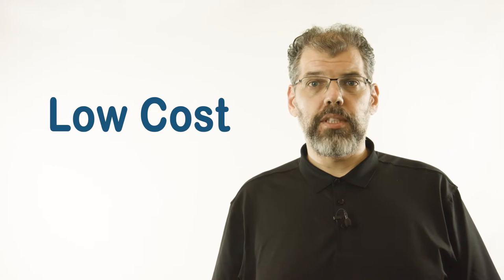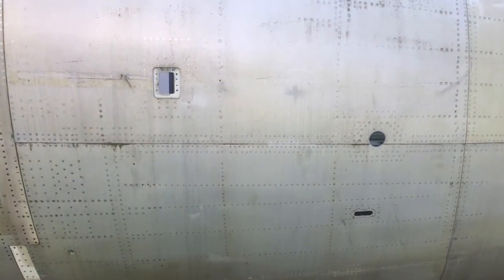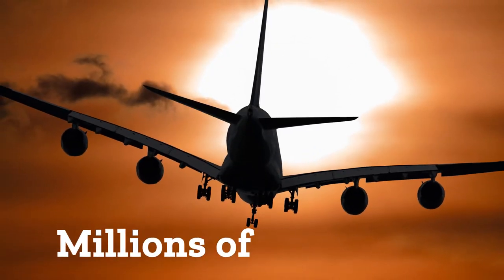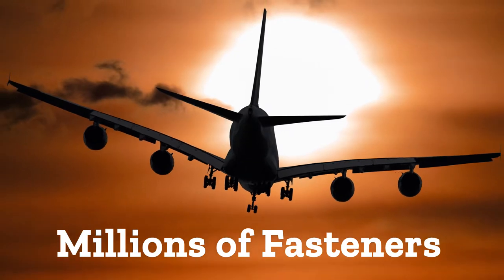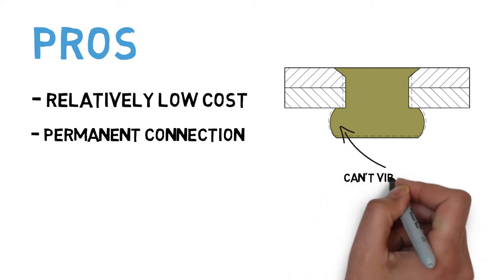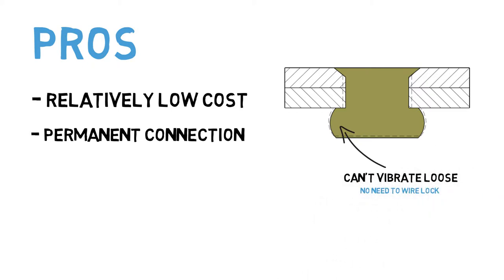Rivets overcome many of the disadvantages of threaded fasteners. They are extremely cheap, not requiring any additional machining steps to produce the fastener itself. This can be a significant overall cost factor when you consider that a modern commercial aircraft can contain millions of fasteners. Rivets also form a permanent connection that cannot vibrate loose, negating the need for costly wirelocking of the individual fasteners. Rivets also have some additional performance benefits that we will look at momentarily, but let's first discuss some of the cons of riveting.